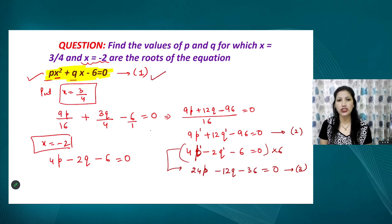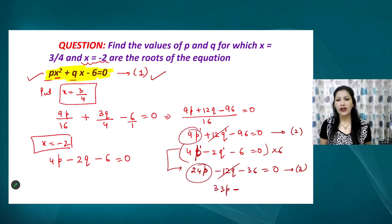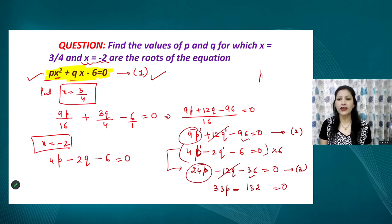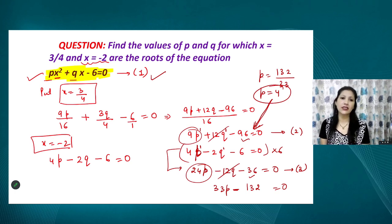Adding equation 2 and equation 3, the 12q terms cancel and we get 33p − 132 = 0, so p = 132/33 = 4. After finding p, substitute this value into either equation 2 or equation 3 to get the value of q. This is the method for finding unknown constants using the concept of quadratic equations and their roots.